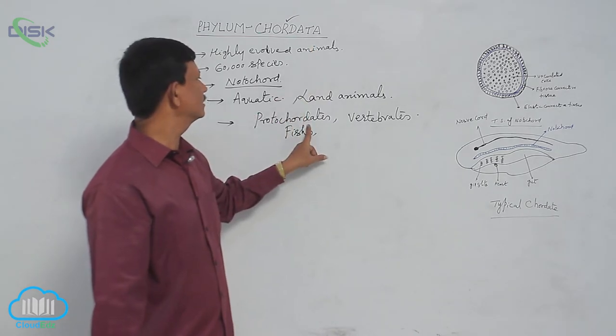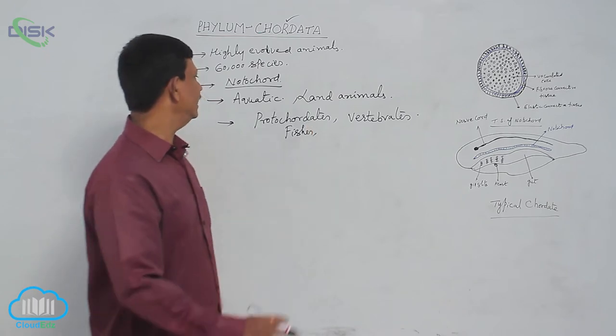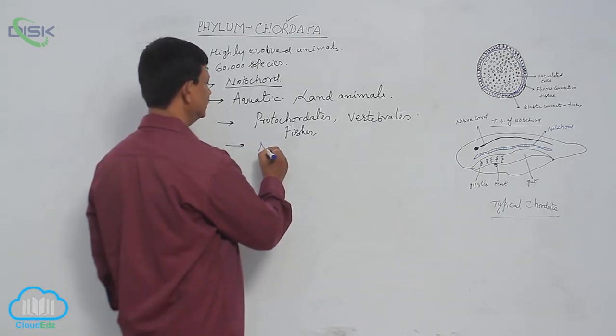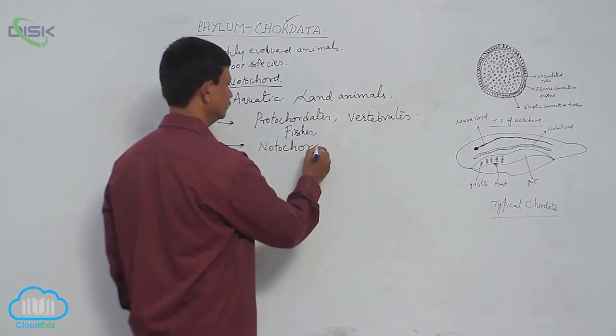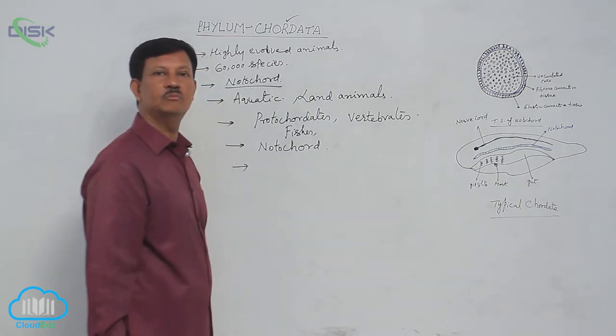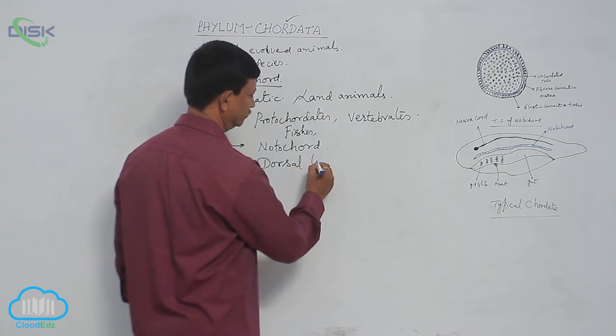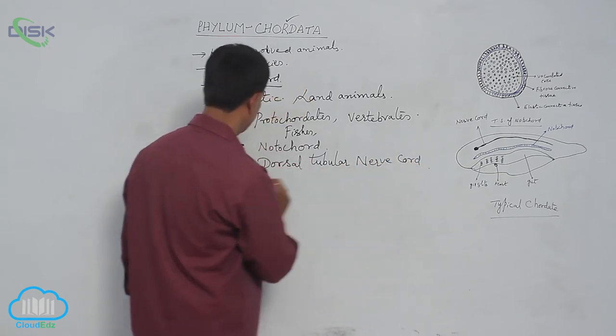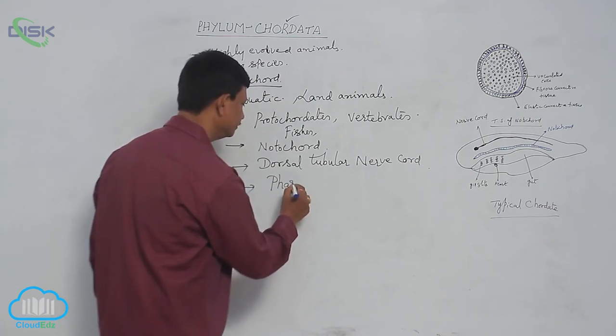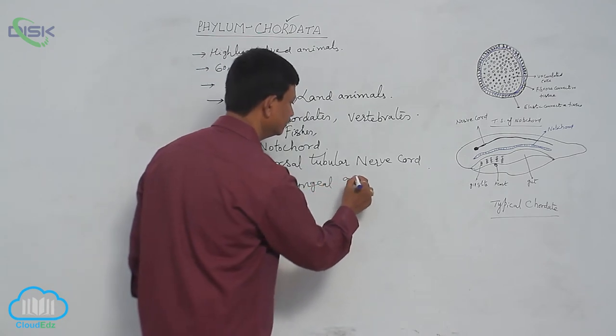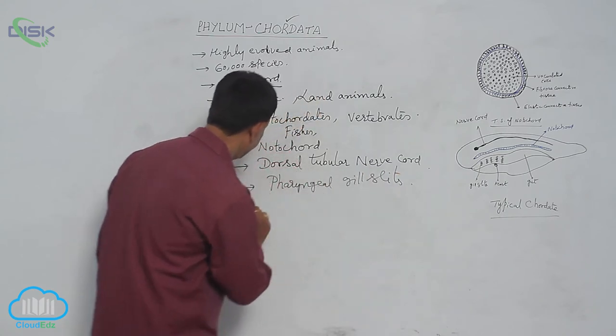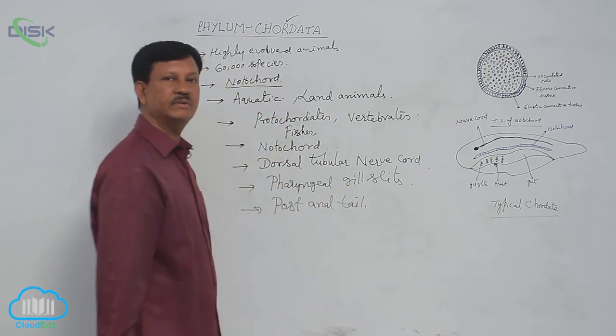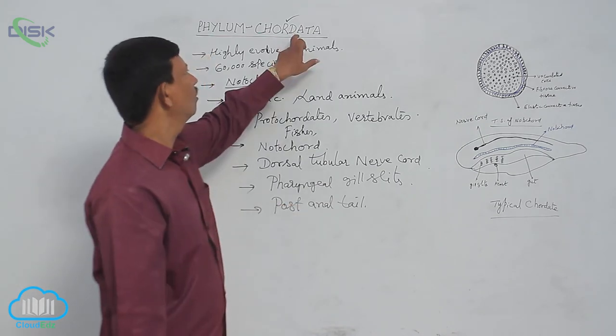Protochordates are primitive chordates. The important characters of Chordata are: presence of notochord, presence of dorsal tubular nervous system or dorsal tubular nerve cord, pharyngeal gill slits or gill clefts, and post-anal tail. These are the chief characters found in all chordates.